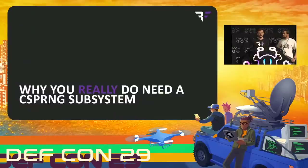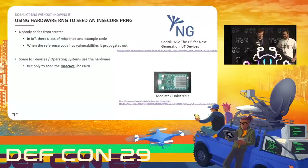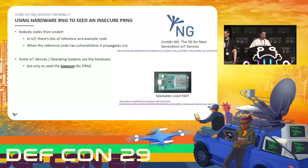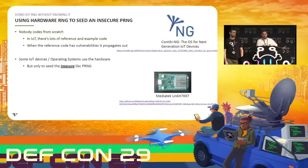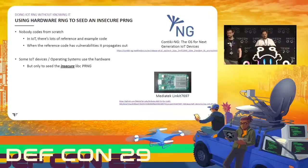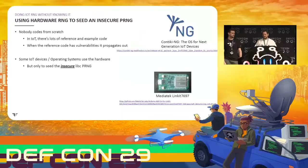Nobody codes from scratch — if there's a library that does what you want, you're going to use it. In IoT there's lots of reference and example code for how to call hardware random number generators, even libraries that do it for you. But sometimes the reference code has vulnerabilities that propagate. There are some really unfortunate examples of this: Contiki and MediaTek.